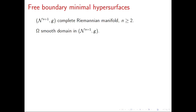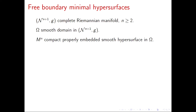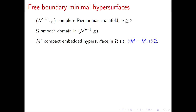The general definition is very easy to give. I want to consider a complete Riemannian manifold of dimension at least three, a region omega in N, and I want to look at compact, properly embedded, smooth hypersurfaces in this domain. The properness condition means two conditions: the boundary of M is inside the boundary of the region omega, and there is no interior point of M touching the boundary of the region.